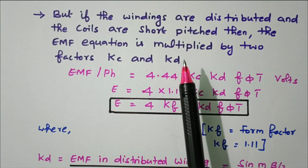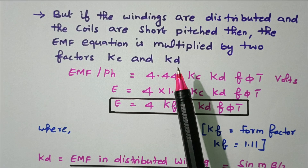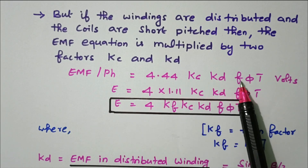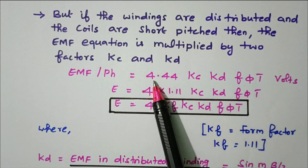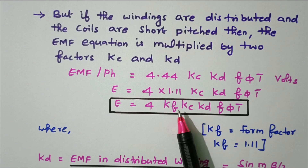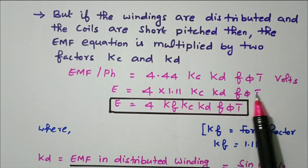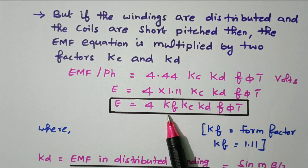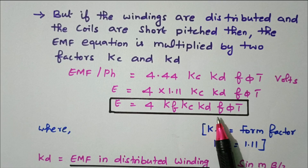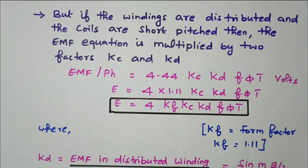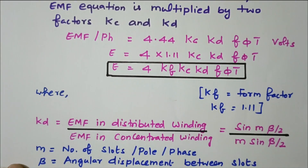Kc is the coil span factor and Kd is the distribution factor. So the EMF per phase for distributed, short-pitched winding = 4.44 × Kc × Kd × f × Φ × T. This 4.44 can be split as 4 × 1.11, where 1.11 is the form factor Kf for a sinusoidal wave. So the full expression includes Kf, Kc, and Kd.